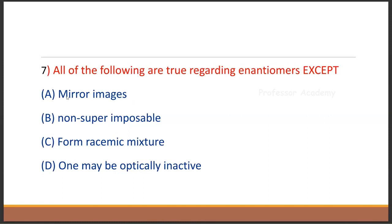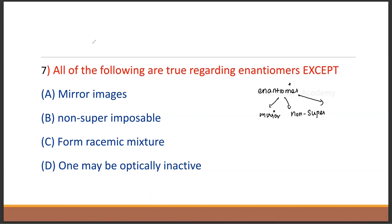Next question: 'All of the following are true regarding enantiomers, except.' Everything is true and one concept is wrong. Enantiomers are mirror images that are non-superimposable. Racemic mixture is correct — it refers to a 50/50 mixture of D and L forms.